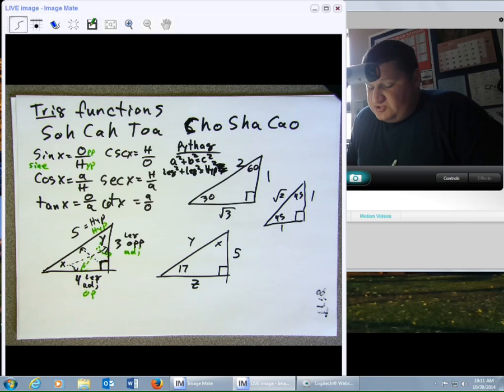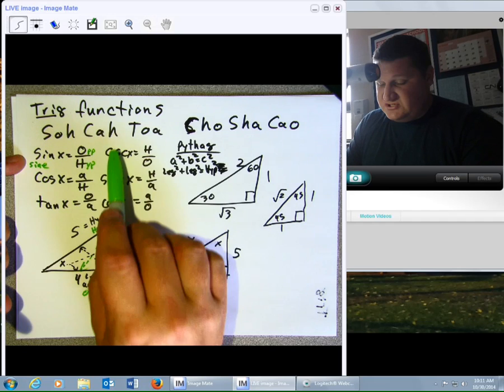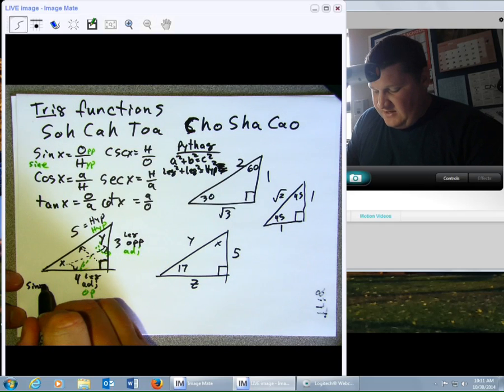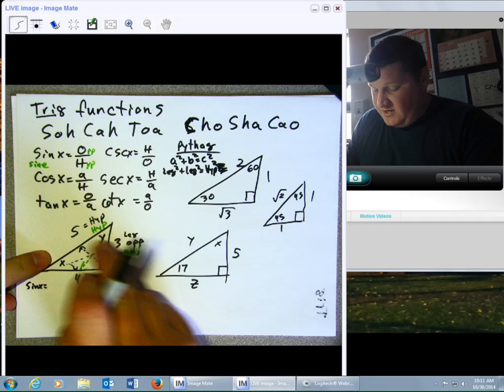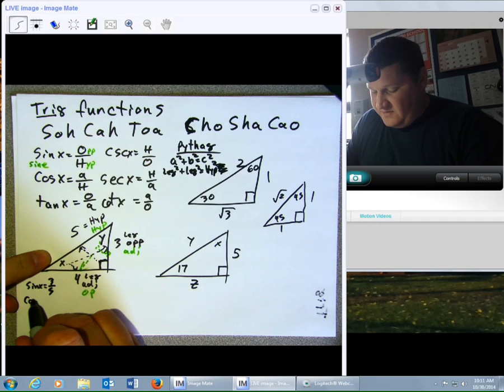So, if we were to try to simply find the sine, cosine, tangent, cosecant, secant, and cotangent of X, the sine of X is going to be opposite over hypotenuse, 3 over 5. Cosine of X is adjacent over hypotenuse, 4 over 5.